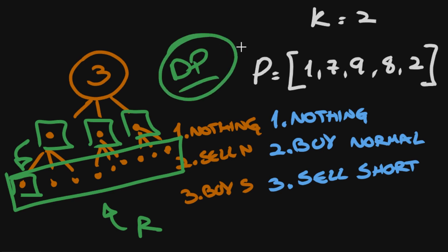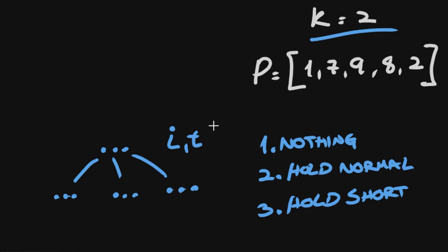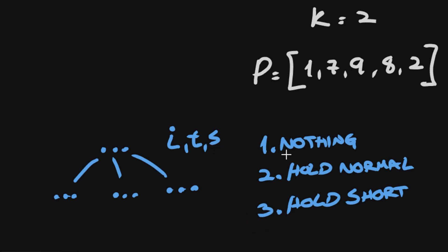We need to carry some information with us at each possible scenario. This information will include the current index we are standing at — this is the day number, starting from zero. We also care about the transaction number, which is very important because we can make at most k transactions, so we need to know how many we have left. And we also care about the current state. We have three possible states: if this is one we are not doing anything at this day, if this is two we are holding a stock for a normal transaction, and if it's three we hold a stock for a short transaction.